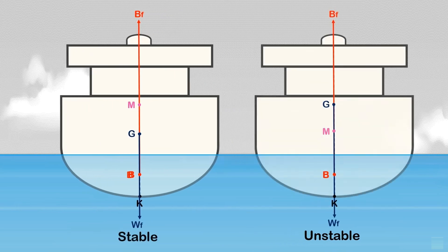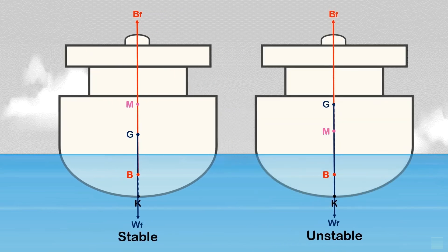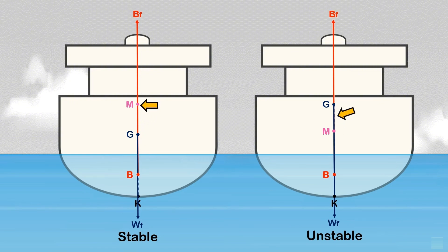Let us take a look at the stable and unstable conditions. This is the stable condition where the metacenter is above the center of gravity, and this is the unstable condition where the ship's center of gravity is above the metacenter.